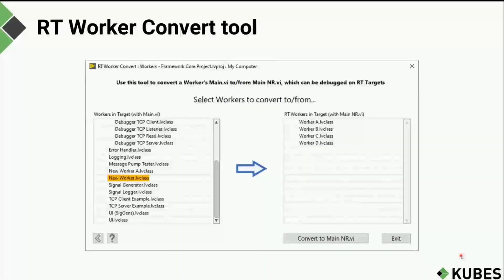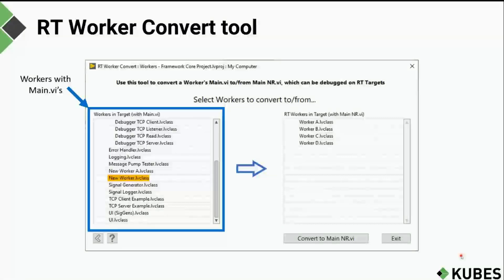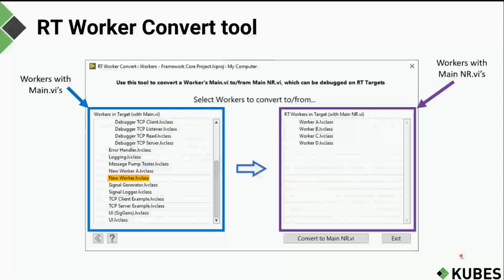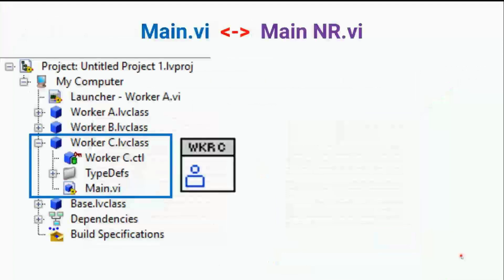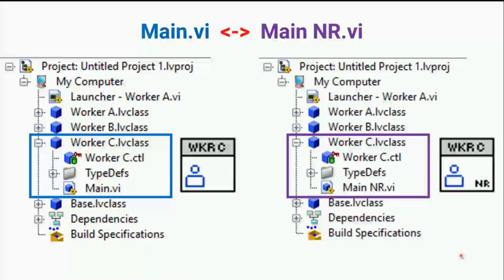The RT Worker Convert Tool is simple to use. The column on the left shows all workers in a project with a reentrant main VI, and the column on the right shows all workers with a non-reentrant main VI. To convert, you batch-select the workers you want to convert in one of the columns and press the Convert button at the bottom. For example, a worker called Worker C with a reentrant main.vi, after conversion, will have a non-reentrant main_NR.vi and the worker's icon will show the NR designation in its bottom right corner.